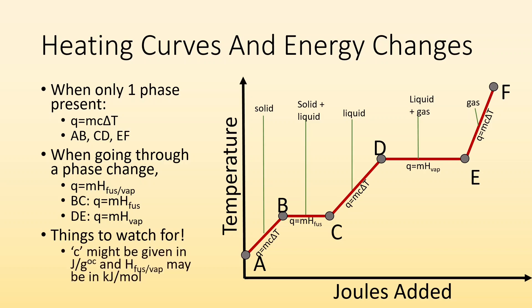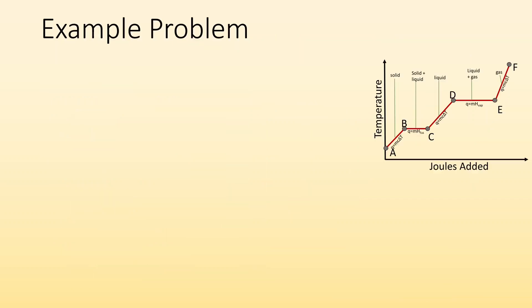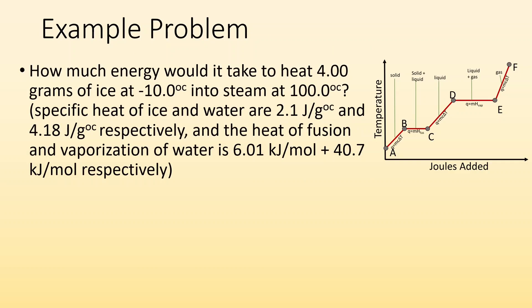Things to watch for: sometimes specific heat, little c, might be given to you in joules per gram degree Celsius, but the heat of fusion and vaporization, they might give you in kilojoules per mole. So when you're asked to calculate the energy of all that changes, you got to make sure that your units are going to agree with each other. So example problem: how much energy would it take to heat 4 grams of ice at negative 10 degrees Celsius into steam at 100 degrees Celsius. The specific heat of ice and water are 2.1 joules per gram degree Celsius and 4.18 joules per gram degree Celsius, respectively. And the heat of fusion and vaporization of water is 6.01 kilojoules per mole and 40.7 kilojoules per mole, respectively. So you see these units don't agree.